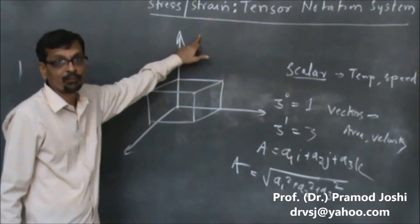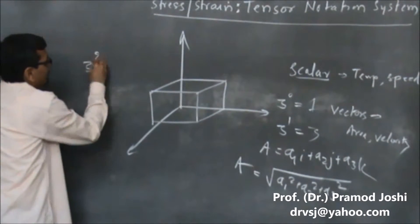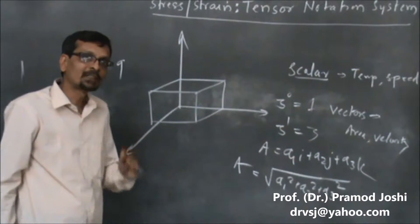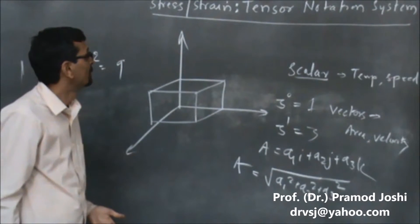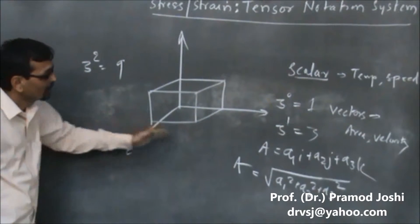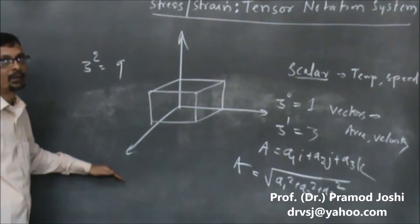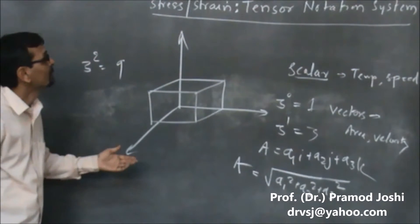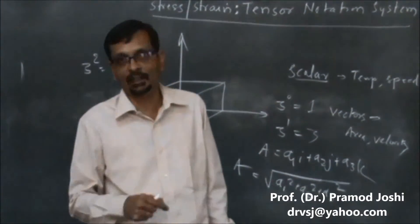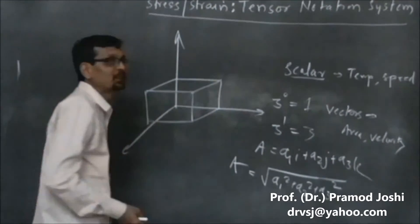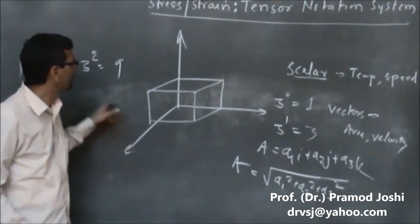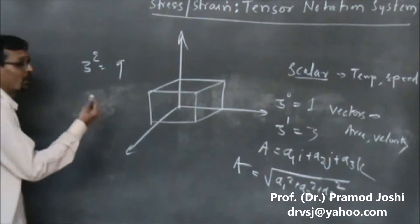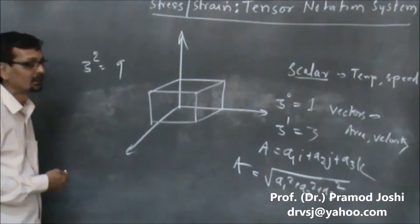Stresses and strains are tensors of the second order, which means that 3 raised to 2 works out to be 9. Other than the magnitude and the direction, we need to also specify the kind of action that the stress element produces. The kind of deformation it produces is the additional meaning that needs to be conveyed when we describe a tensor of the second order. A tensor of the second order means 3 raised to 2 — that means 9 stresses can be defined.